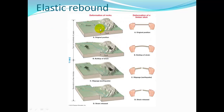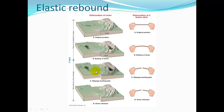On either side of the fault, one side is straining to move one way while the other side is trying to move the other way. There's a lot of strain and energy built up along the fault line. When that fault slips and the earthquake happens, energy is released and the Earth vibrates, then snaps back into place.